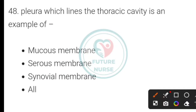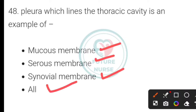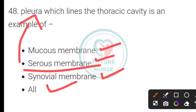The pleura which lines the thoracic cavity is an example of which type of membrane? Options: mucous membrane, serous membrane, synovial membrane, or all of the above. The correct option is serous membrane.